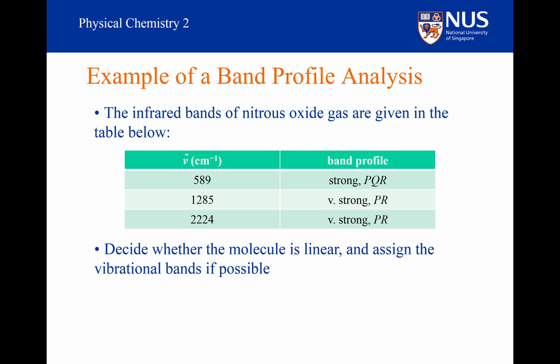Well, first of all, can we work out whether it is linear or non-linear? The first thing we notice is that there are PR band profiles. If nitrous oxide was bent, all band profiles would be PQR. This means that nitrous oxide is a linear molecule.